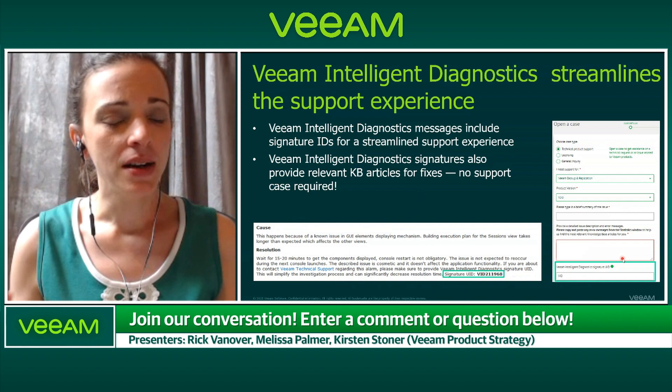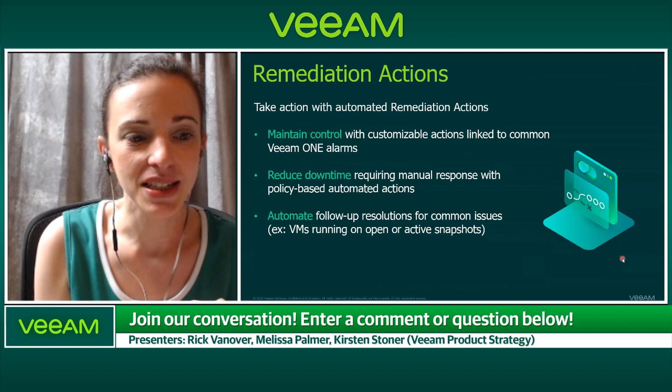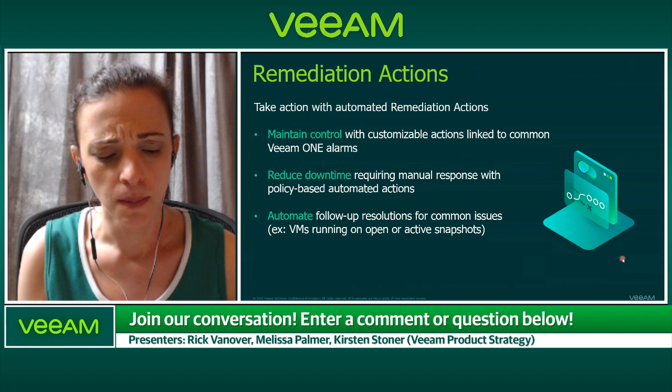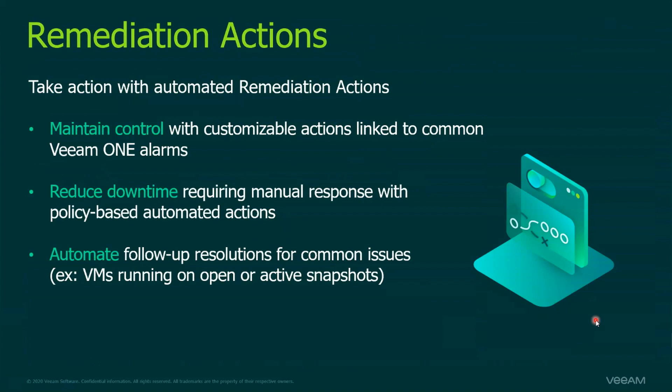Keep in mind, a lot of these issues we'll find before you even see an issue, so you're being really proactive and fixing things before they go wrong. Now I want to take a look at something called remediation actions. A remediation action in a Veeam One alarm has customizable options. We have a bunch of them that come out of the box — it's the ability to take an action when an alarm is triggered. You can also put a custom script in any alarm to take action.